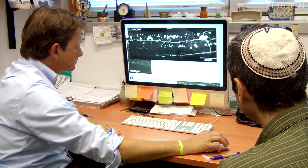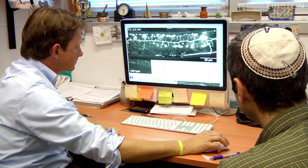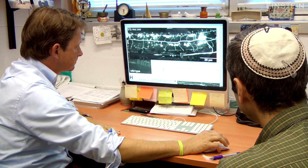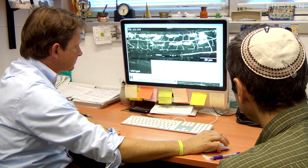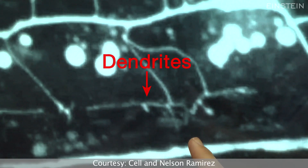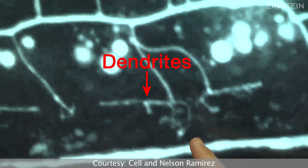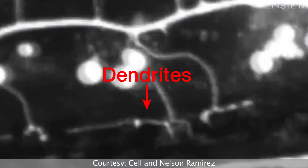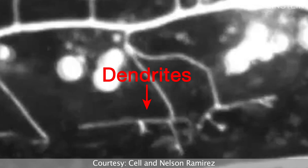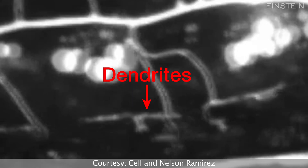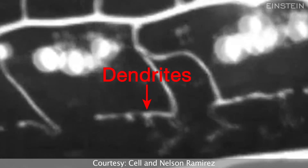This is the first time that we've identified genes that act in the skin to shape those specialized nerve cells that sense touch and pain.